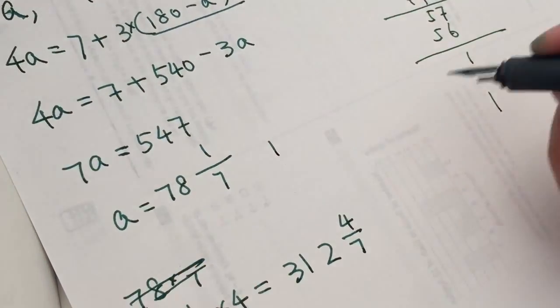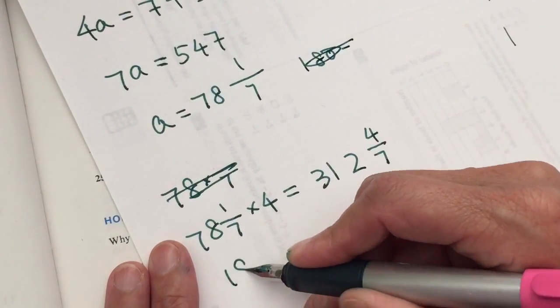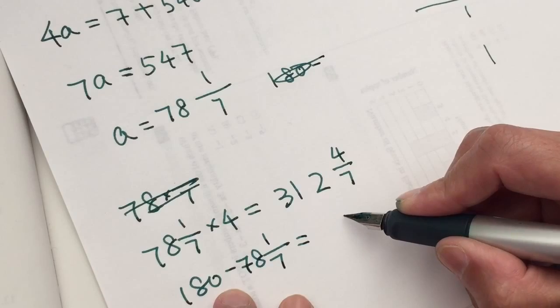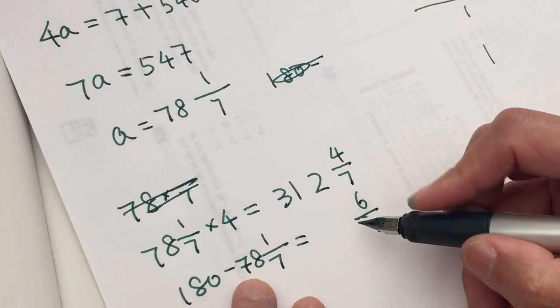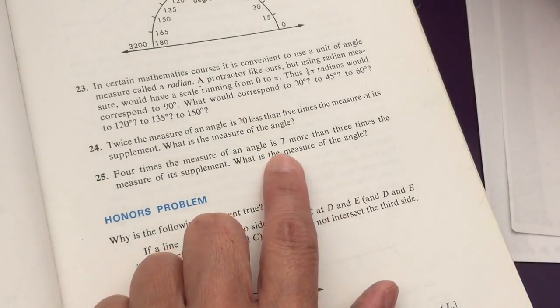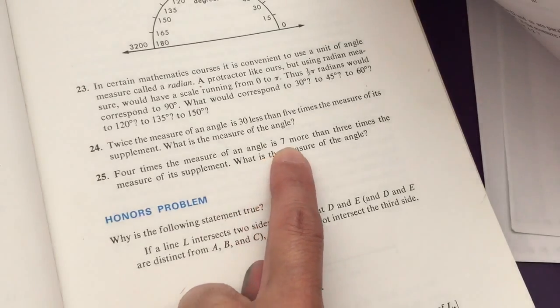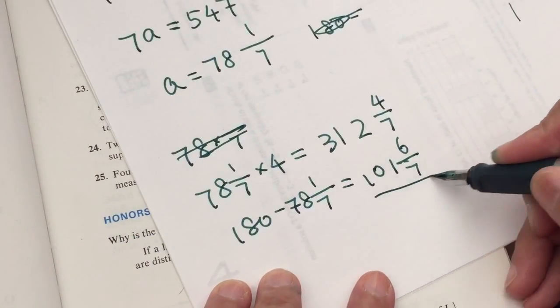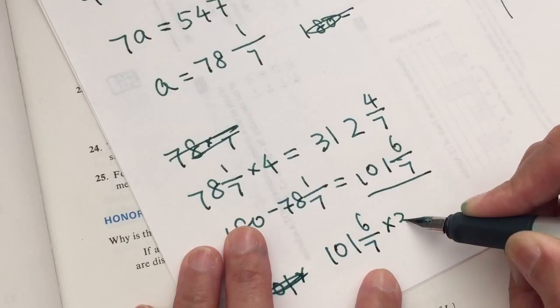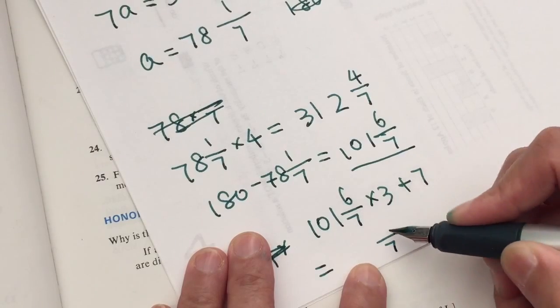And its supplement is 180. It's 180 minus A. So 180 minus supplement, 180 minus 78 and one seventh is 101 and 6/7.